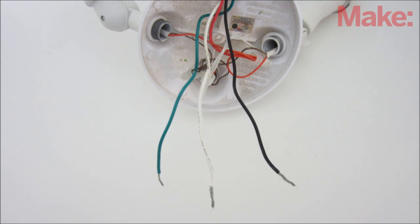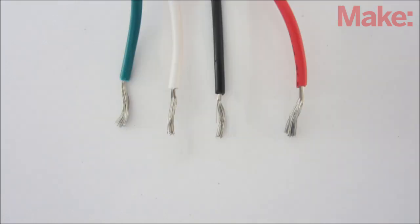Start by identifying the wires that are connected to the motion sensor unit. In this case, the green wire was ground, the white wire was neutral, the black wire was the hot input to the sensor, and the red wire was the hot output from the sensor.